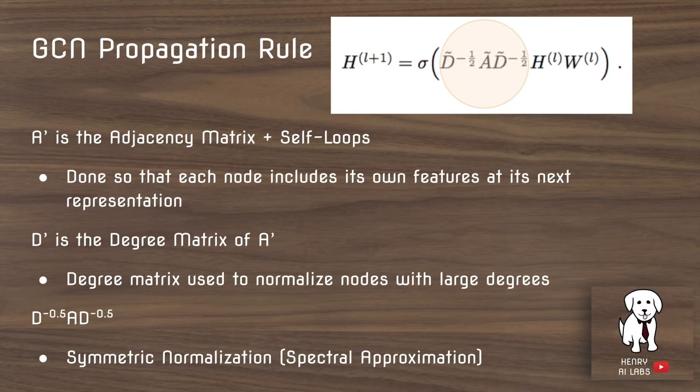So the most interesting component of this is the DAD term. So just to define the terms in this, A prime is the adjacency matrix, where an adjacency matrix is how you define the edges in a graph, plus added self loops. And the self loops are added so that each node includes its own features at the next representations, as well as to help with numerical stability.